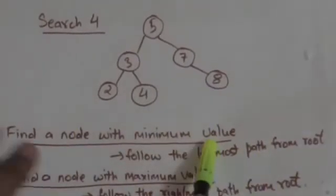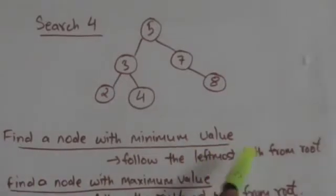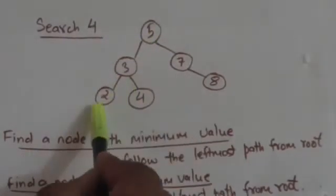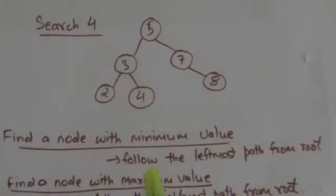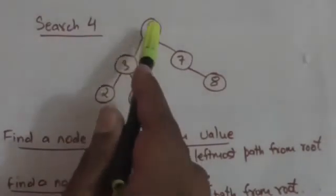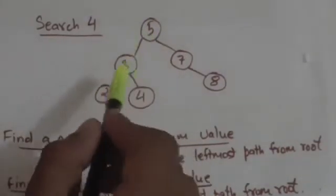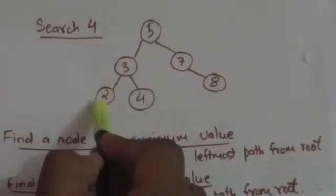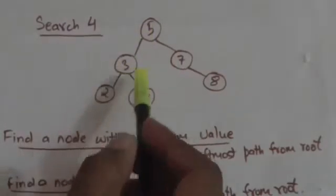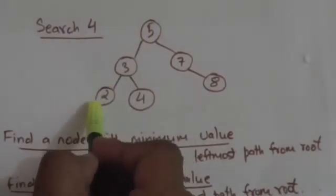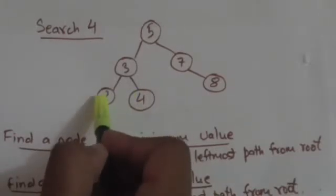To find the node with the minimum value in a binary search tree, we start from the root and follow the leftmost path. The node we reach at the end contains the minimum value. In this example, following the leftmost path from root, we reach the node with value 2, which is the minimum value in this binary search tree.